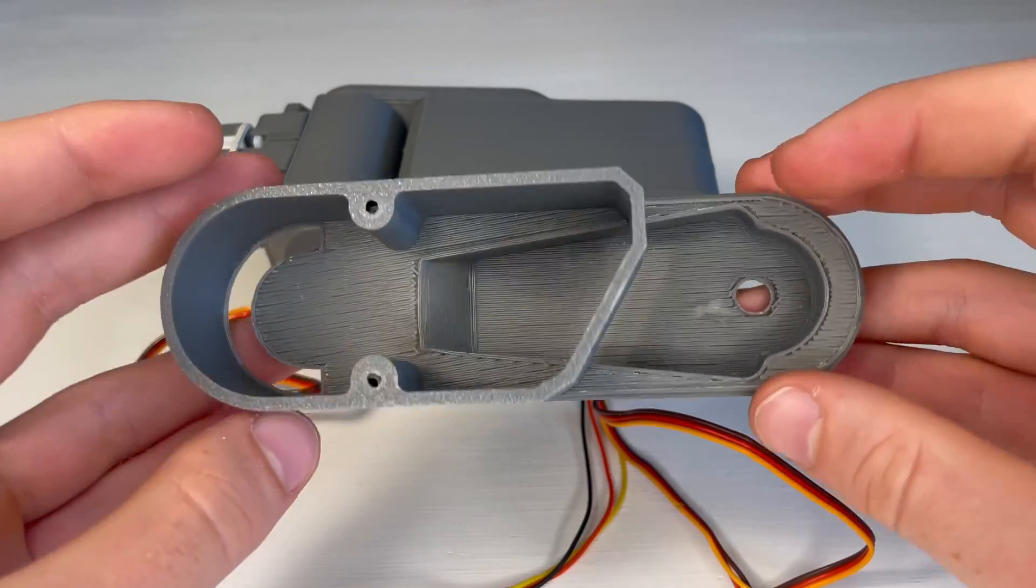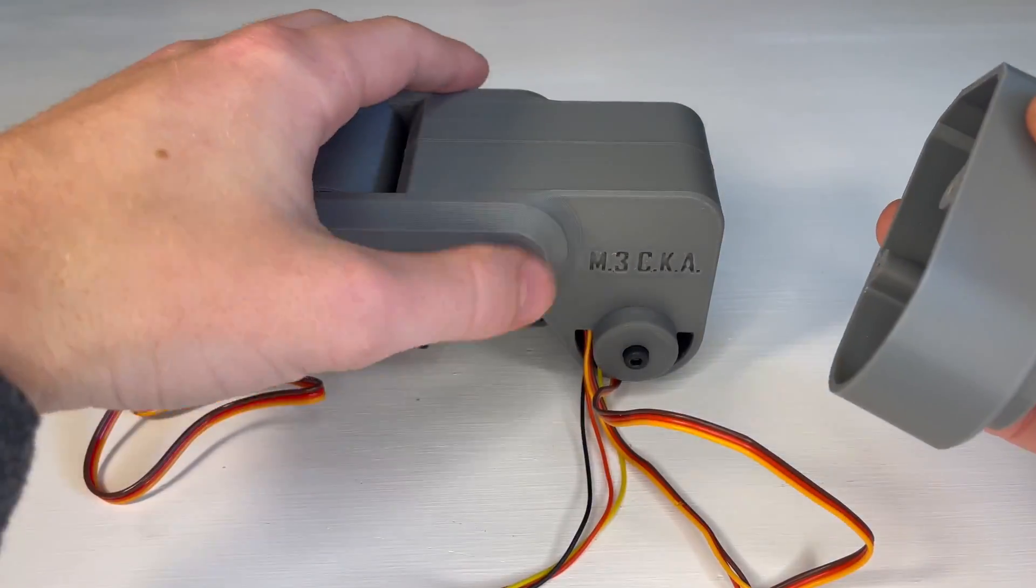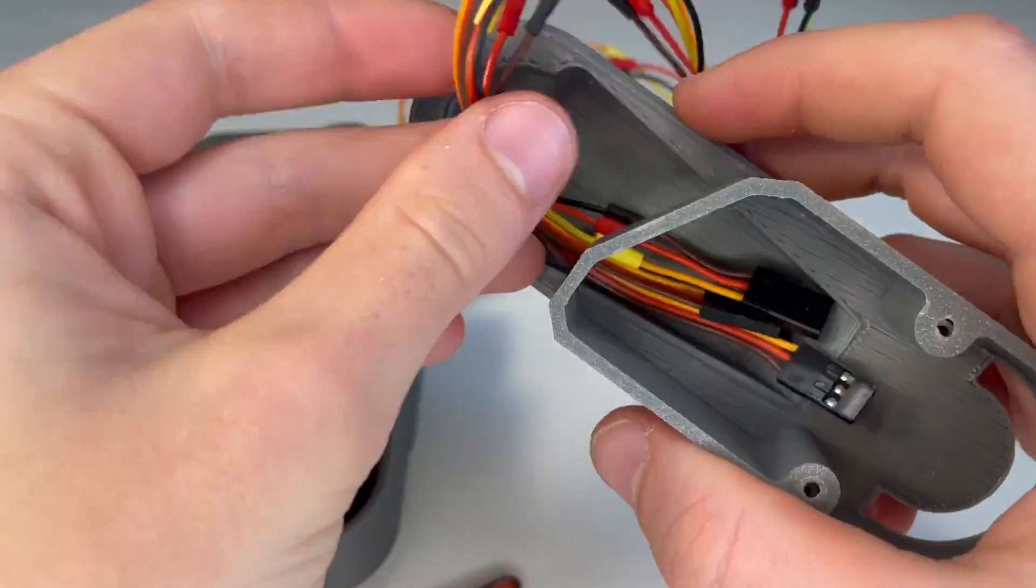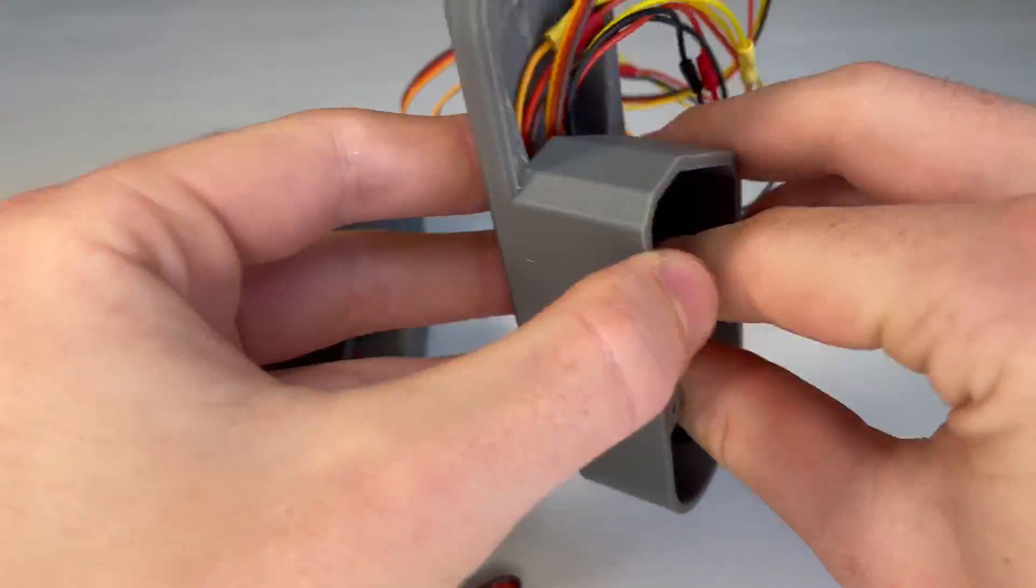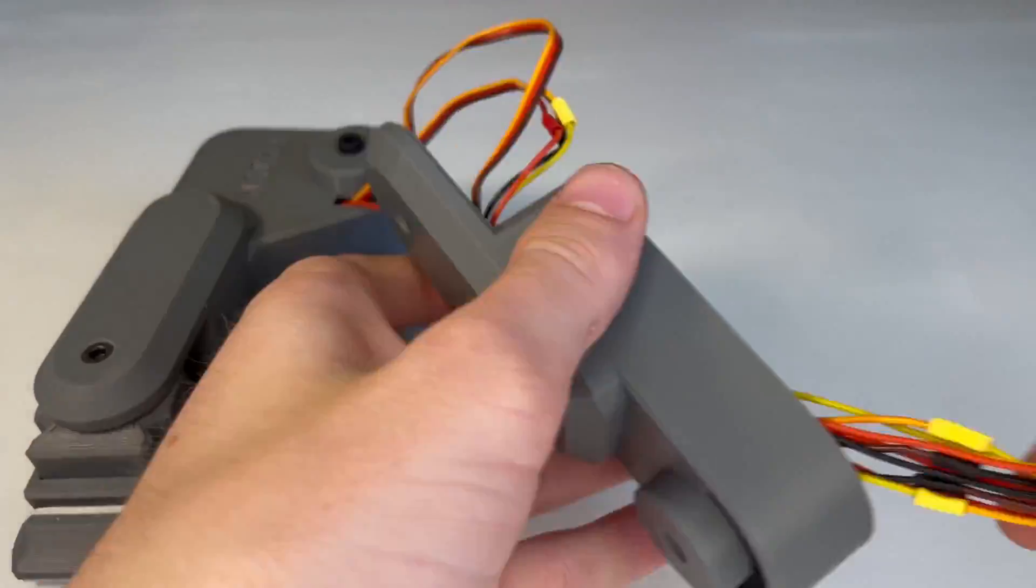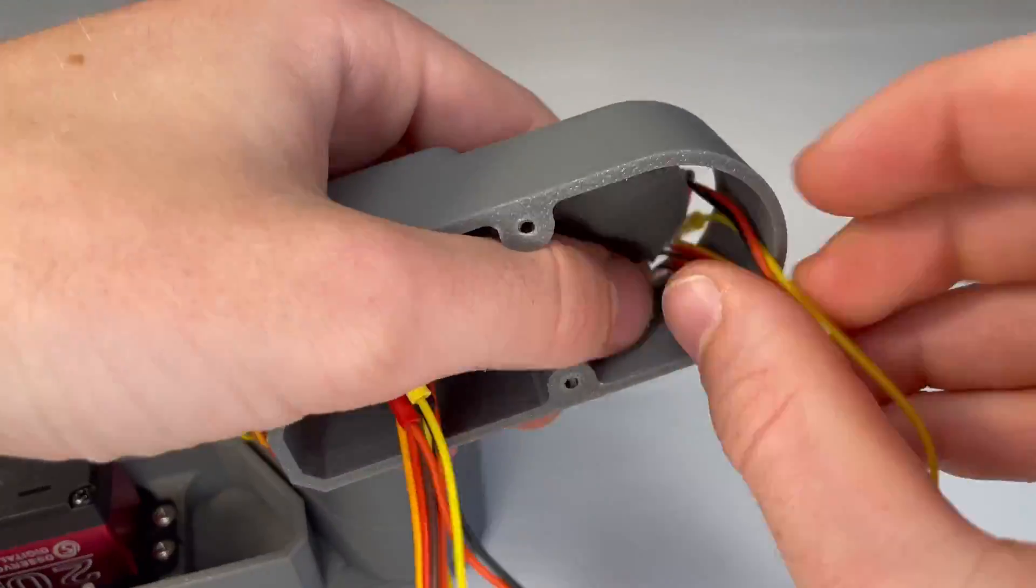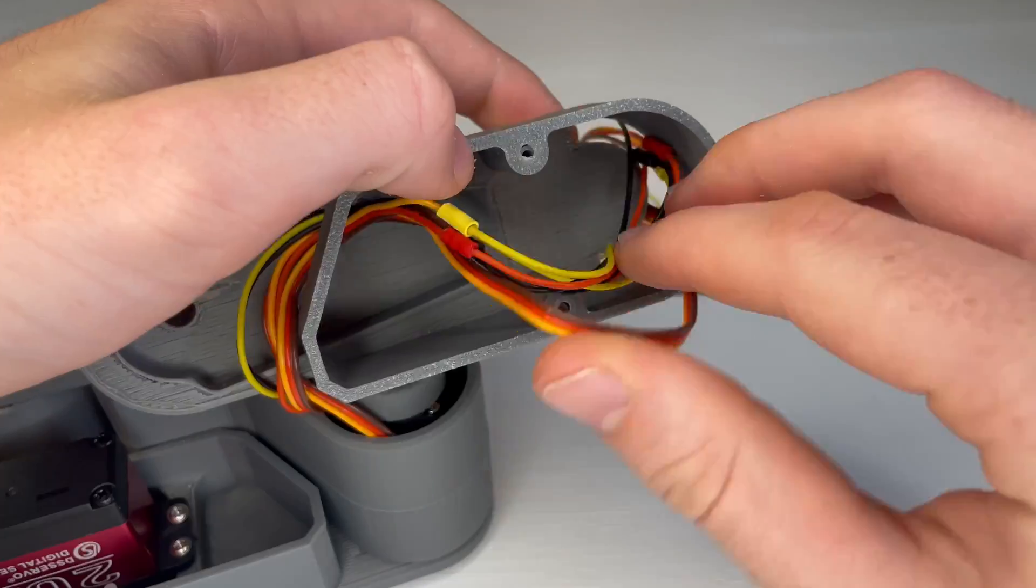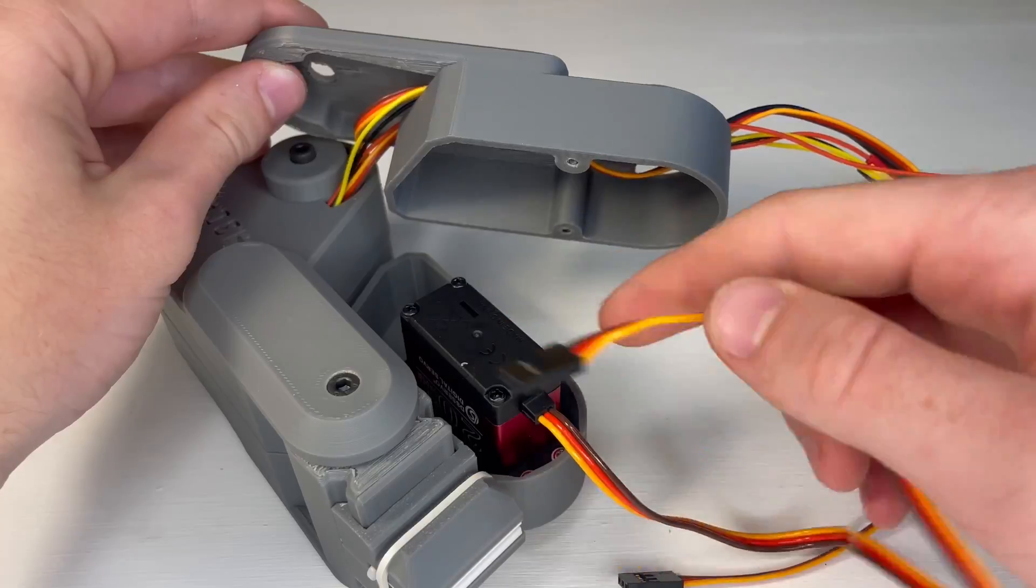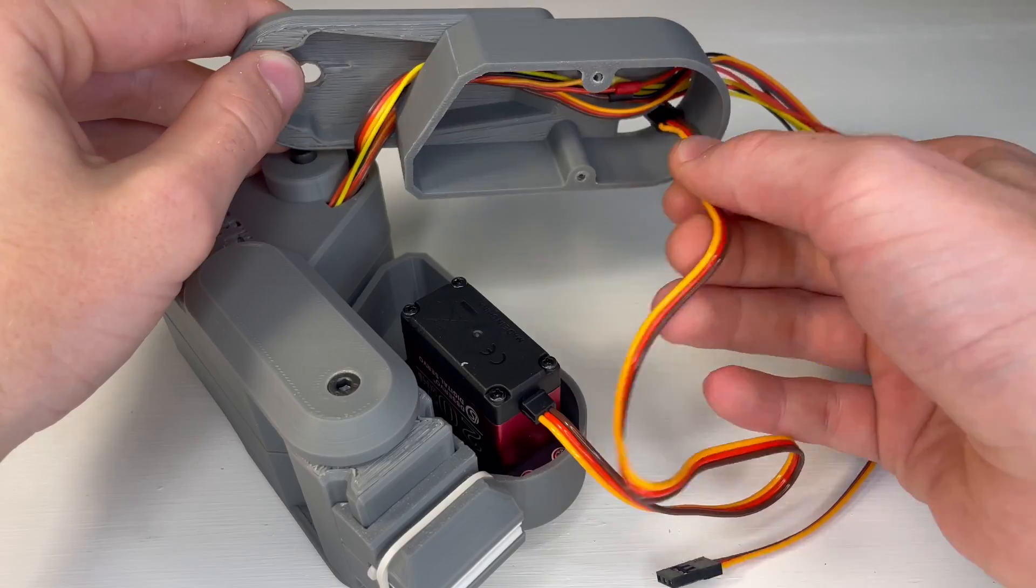Now taking the other half of our main arm we will feed all of the servo wires except for the 20kg servo wire into these two slots as shown. Then we will feed our 20kg servo wire through only one of these.